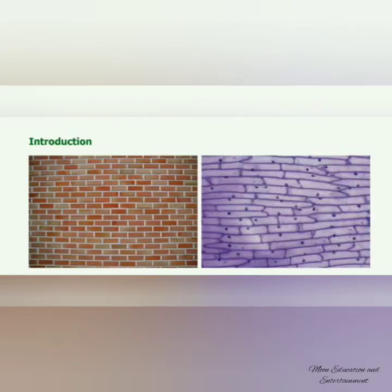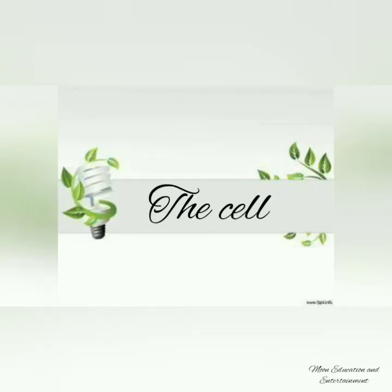Look at the picture — are these pictures looking similar? The first picture shows a brick wall, and the second one is a similar image of an onion. Like the brick wall, our human body is also made up of a lot of cells. The cell is the basic building block and structural unit of all living things, as it carries all essential functions. Let us see about the discovery of the cell.